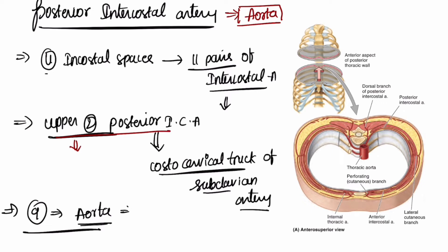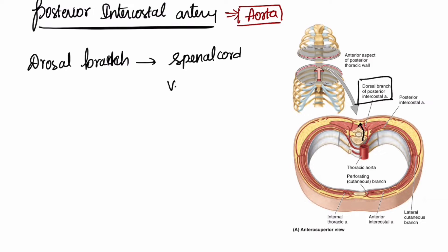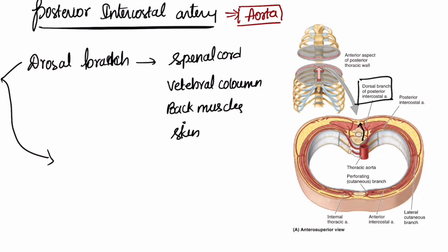These upper two posterior intercostal arteries are known as the supreme intercostal arteries. The posterior intercostal artery gives rise to a dorsal branch, which supplies the spinal cord, vertebral column, some back muscles, and the skin of the back. The posterior intercostal artery also gives rise to collateral branches.